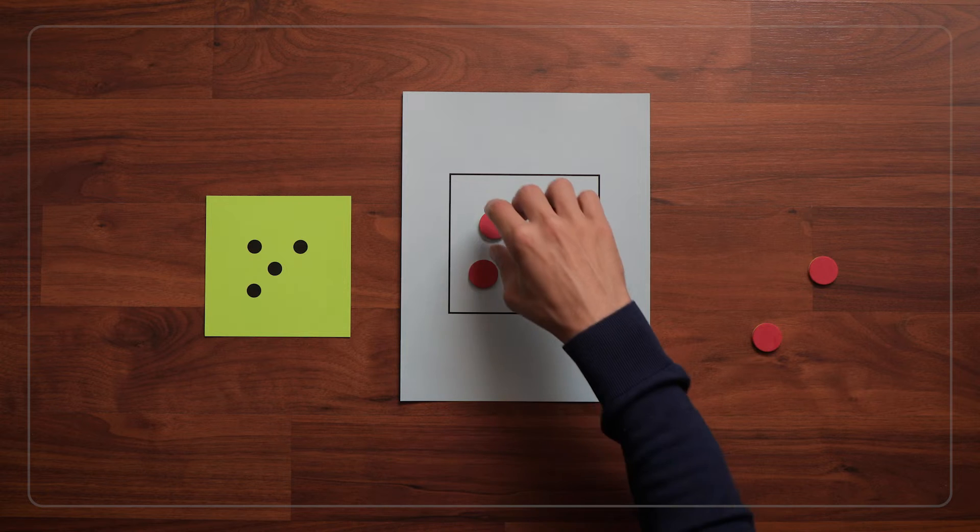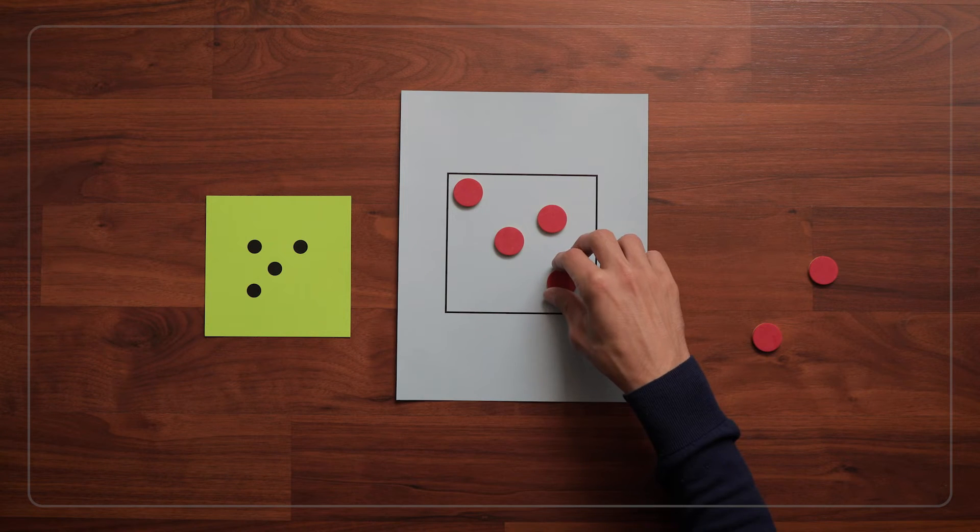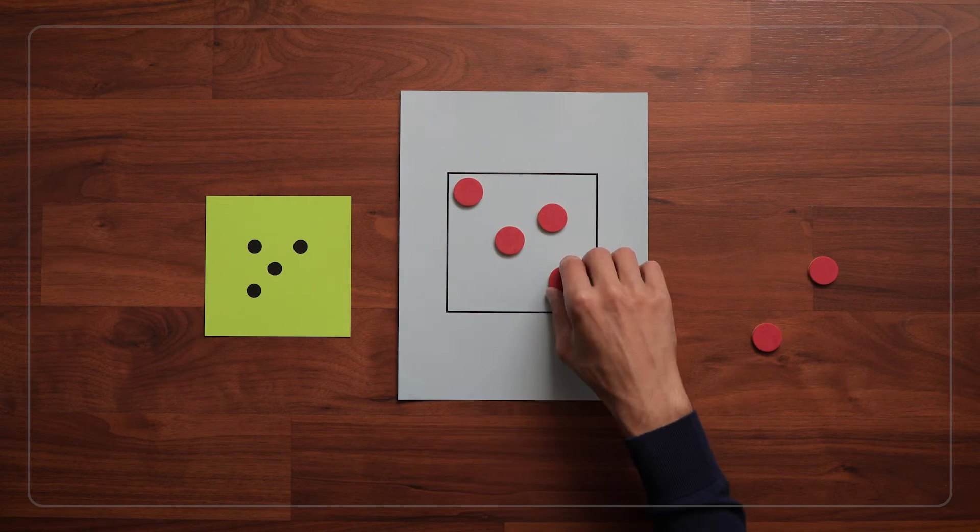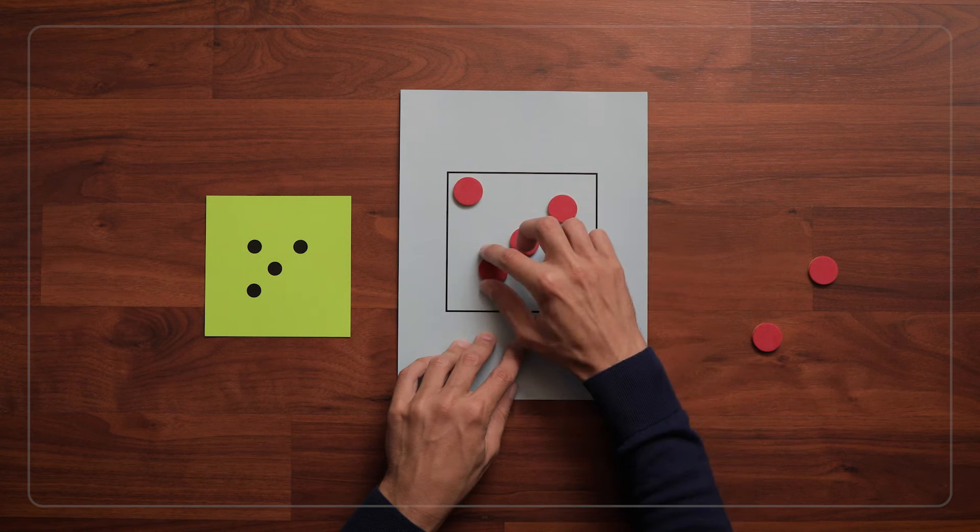Or they might have their tokens in a diagonal line, but going in the other direction. But little by little, you can help them see the differences between their design and the original dot card.